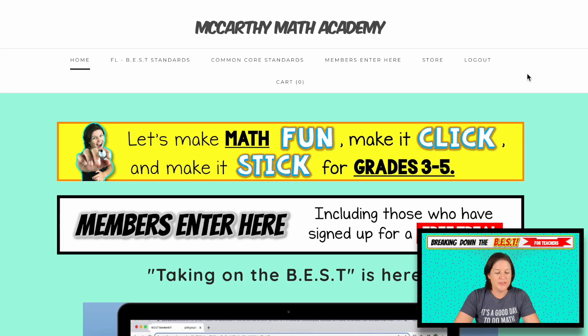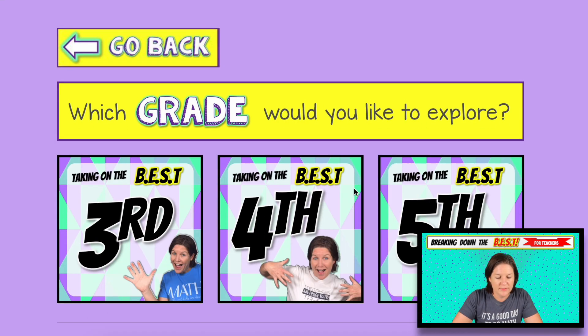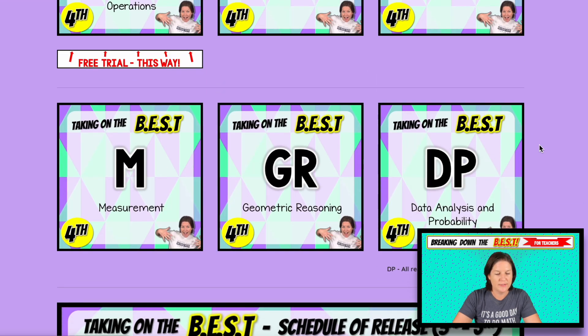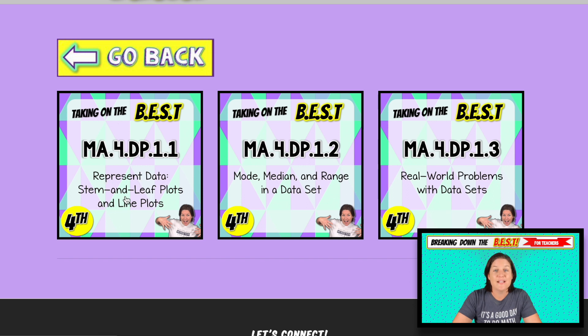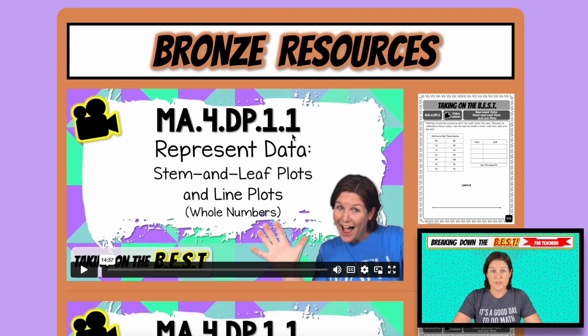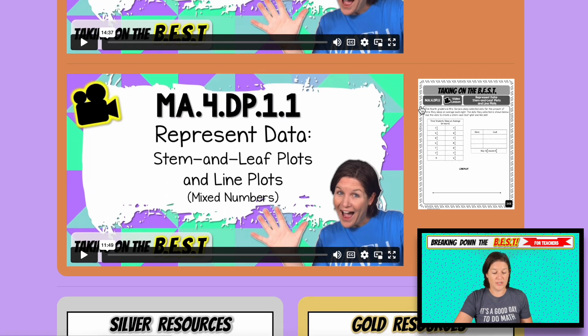So here we are at the website. We're going to click right here at members enter here, select Taking on the Best fourth grade, scroll down to the DP strand. And then we want MA.4.DP.1.1, which was representing data, stem-and-leaf plots and line plots. You can see that we're going to get into mode, median, range, real world problems, all that. But today we're focusing on the stem-and-leaf plots and the line plots. The very first page that opens up will be your bronze resources. These include the video lessons and the printable notes.